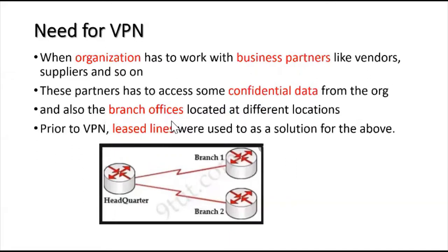In order to protect the confidential information, prior to VPN, lease lines were used. These lease lines were a private telecommunication — a point-to-point connection created between the business partner and the organization, or between the branch office and the headquarters. For example, in this figure, the organization has two branch offices, and prior to VPN, a lease line — a point-to-point connection — was used to connect each branch office to the headquarter.